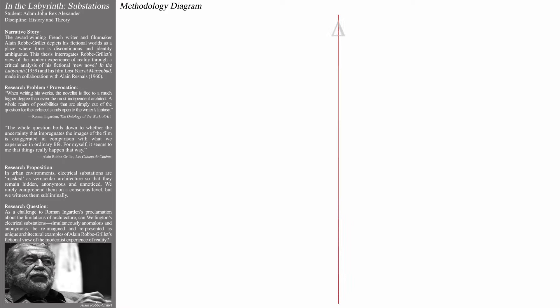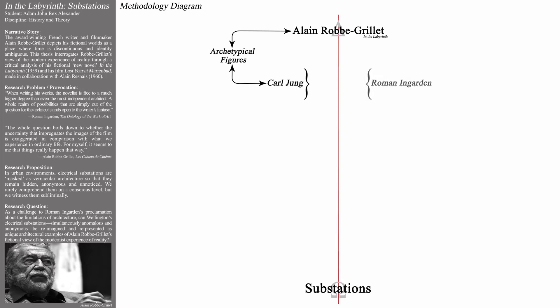The following diagram represents Adam's methodology. Adam began by placing alpha and omega, the first and last letters of the Greek alphabet, at the start and finish of his methodology diagram. Over the letter alpha he wrote Alain Roque-Grié, and over the letter omega he wrote Substations. Adam's principal theorists were the psychologist Carl Jung and the philosopher Roman Ingarden. To represent these theorists, Adam placed the Greek letter psi, which is a symbol of psychology, onto his methodology diagram.